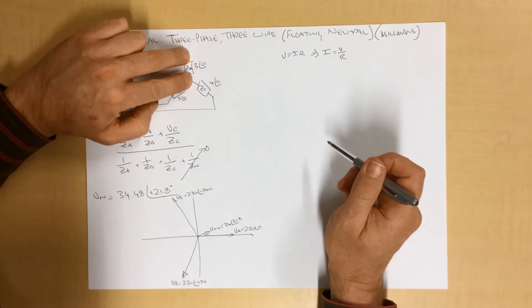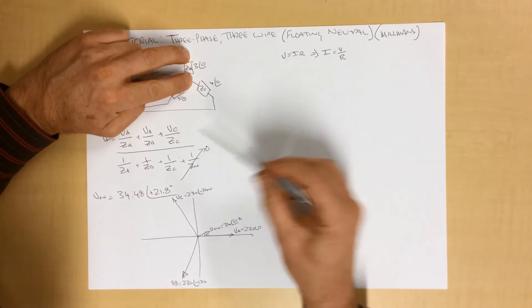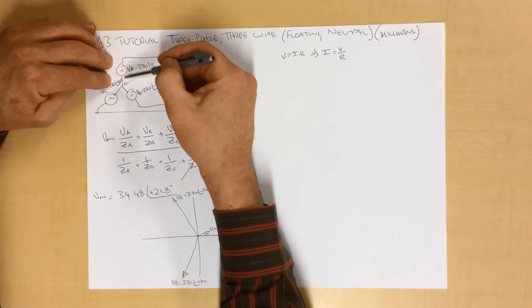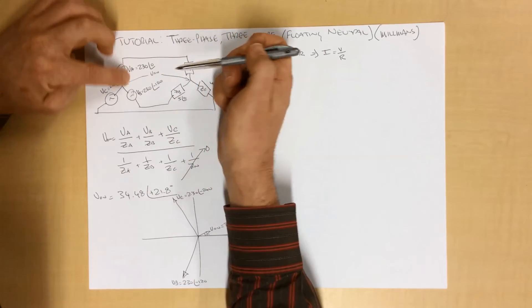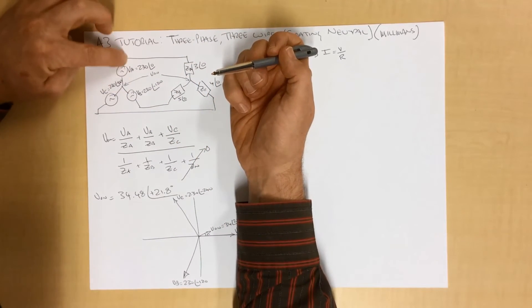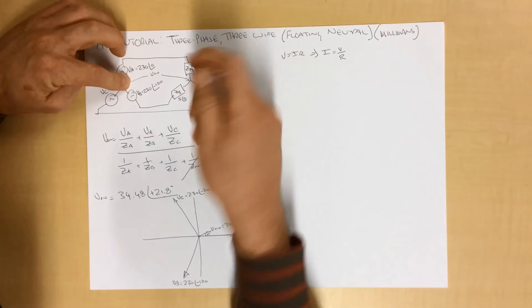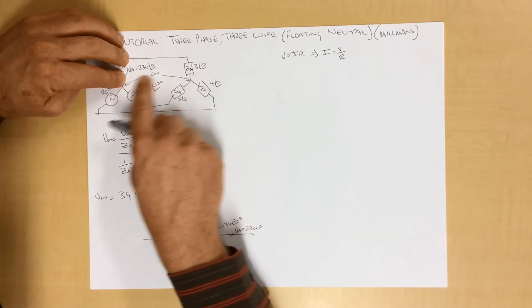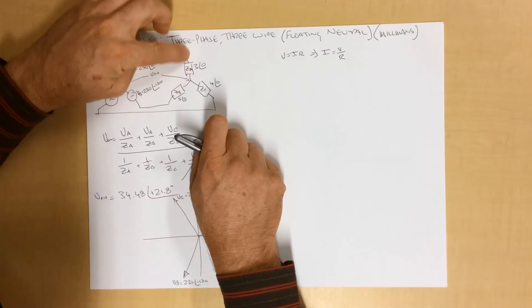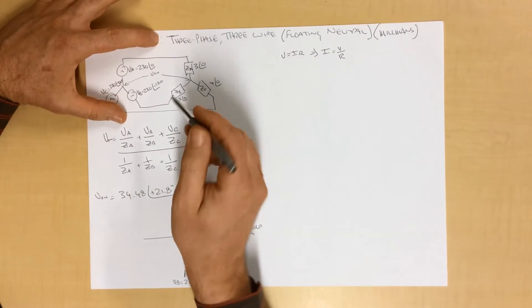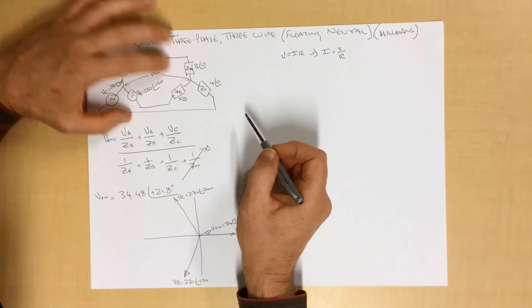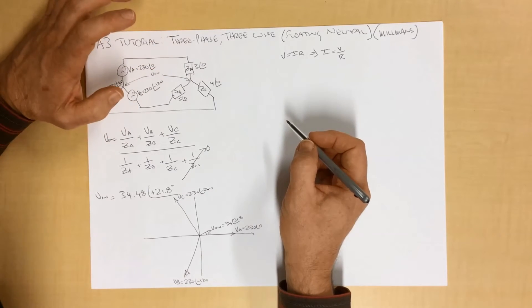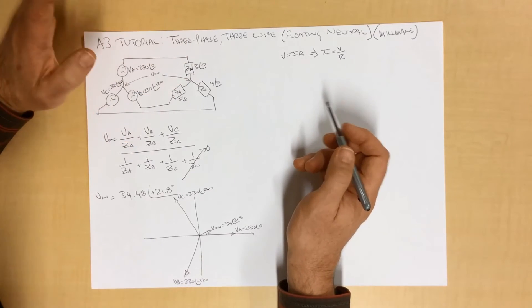We don't know what the voltage across here is. But because of Millman's theorem, we do. We know that the voltage here is 230. And we know the voltage here is 34. So the voltage here, if we consider this as being, this is effectively our circuit, our voltage here must be the difference between the two. So it's a fairly straightforward logical expression.